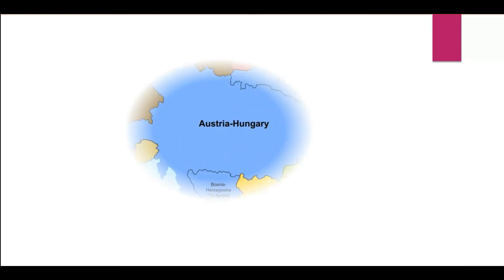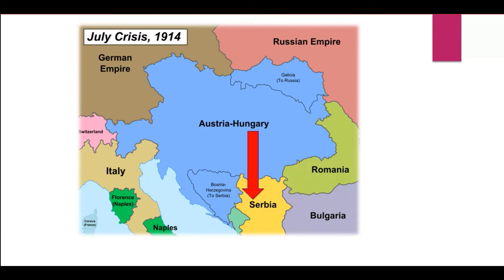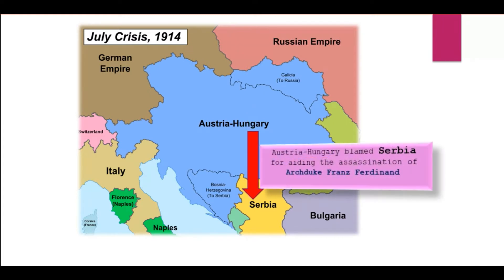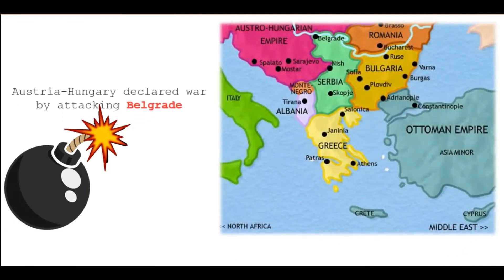The assassination challenged the authority of Austria-Hungary. Austria-Hungary blamed Serbia for supporting or aiding the assassination of Franz Ferdinand, and soon Austria-Hungary declared war against Serbia by attacking Belgrade.